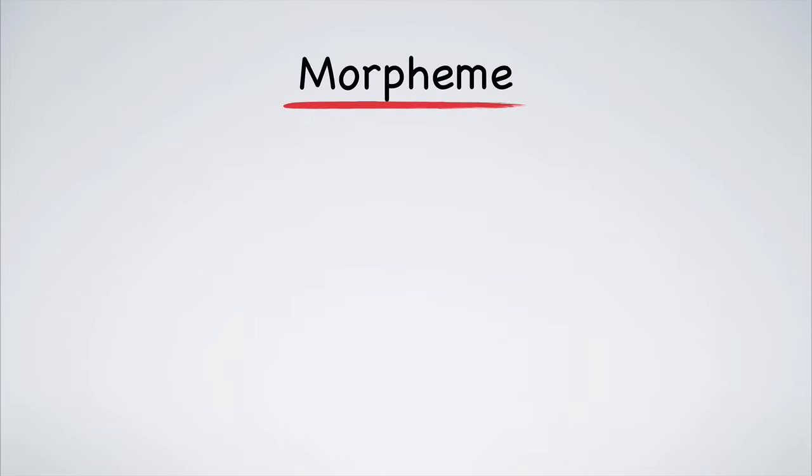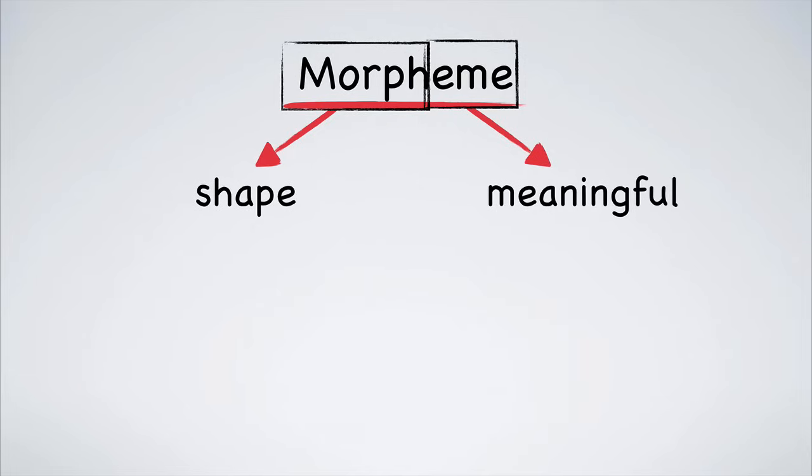This is a word that is used in linguistics. It is used to describe a group of sounds that is meaningful. For example, the word morpheme has two morphemes in it: morph and eme. Morph means shape and eme means meaningful. We know that they are separate meaningful units because they can be added to different words while having the same meaning.